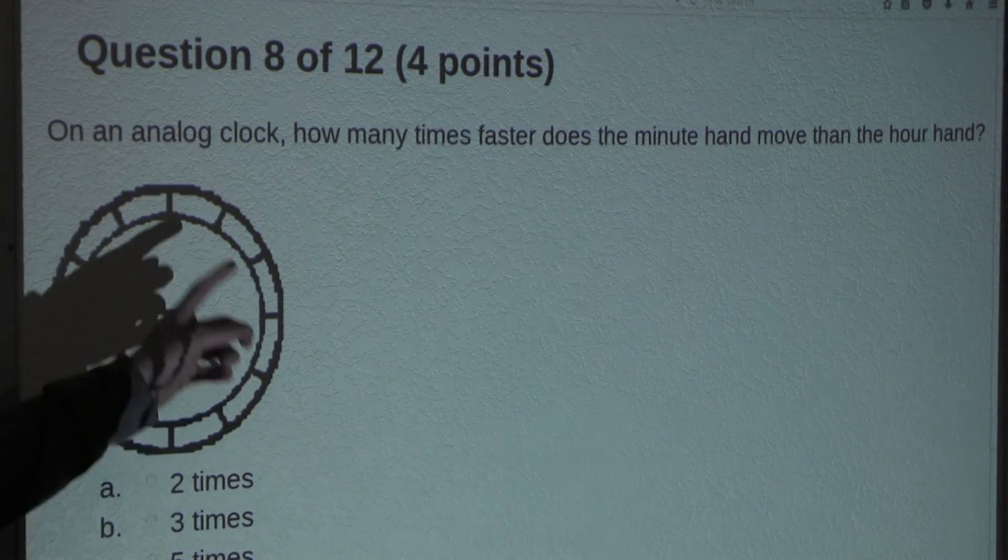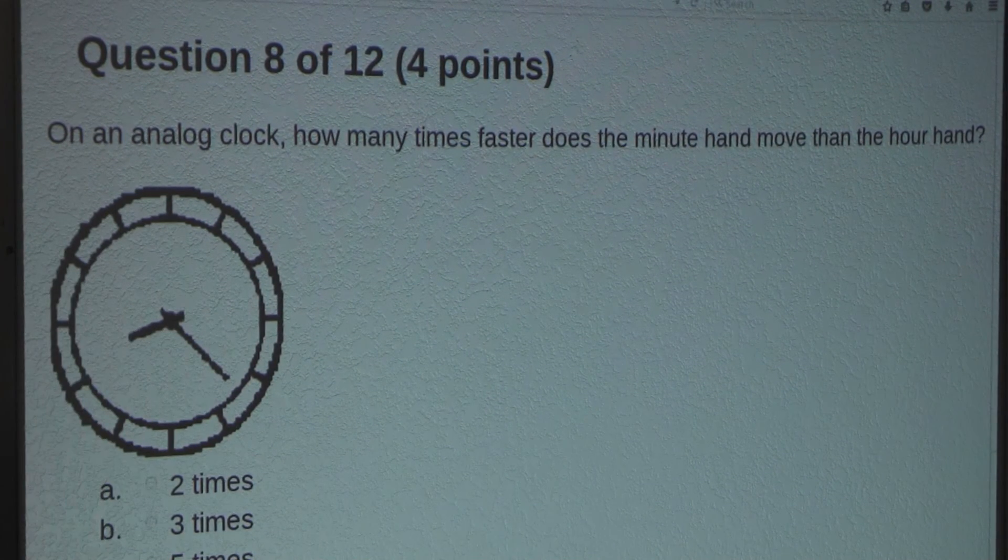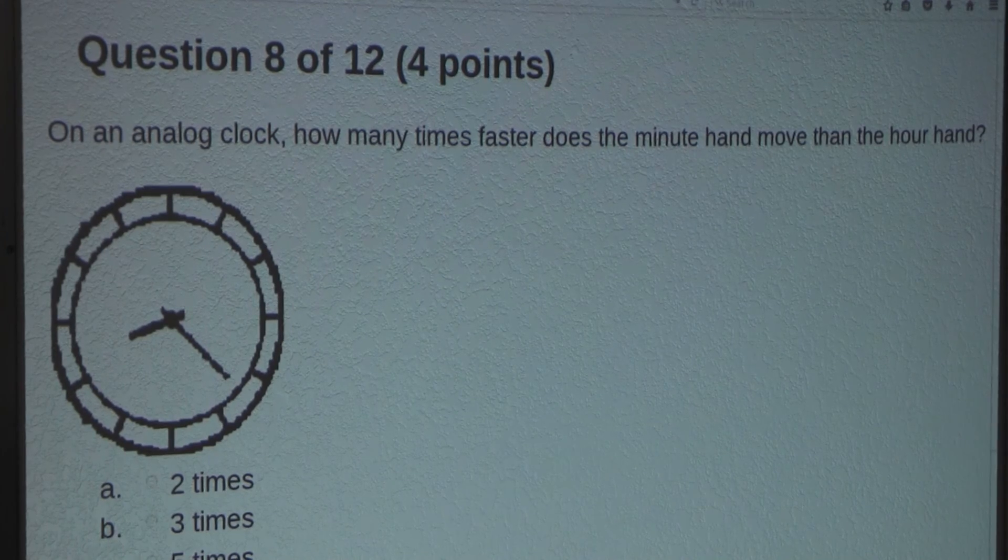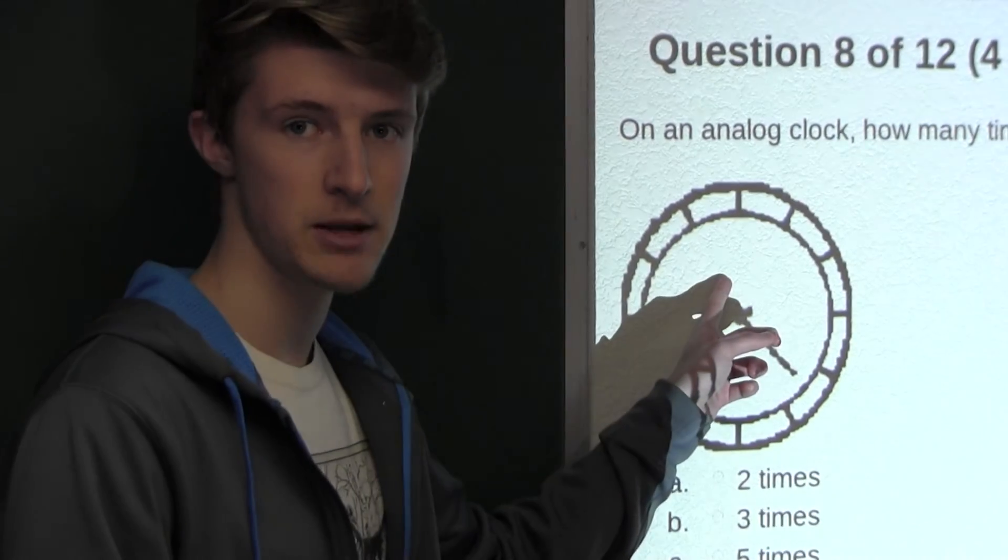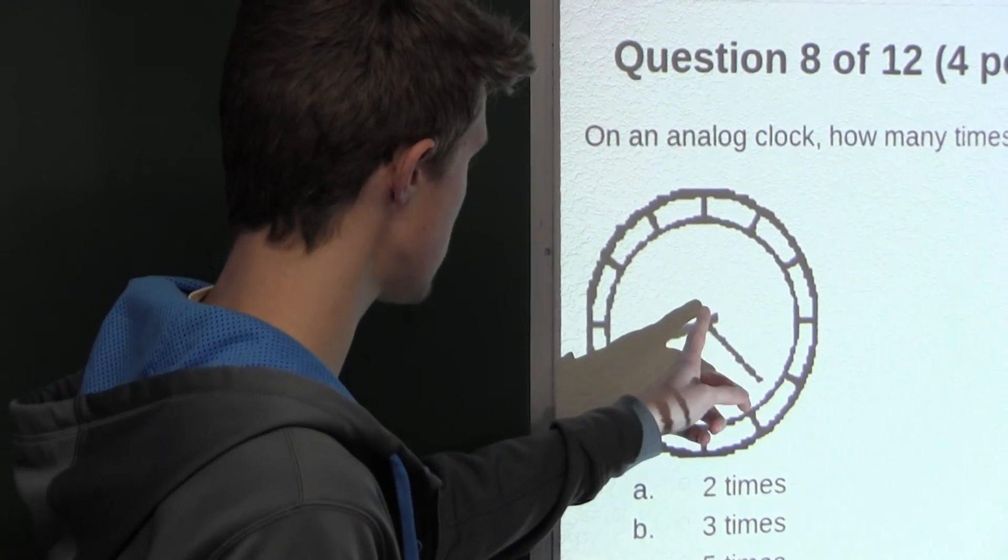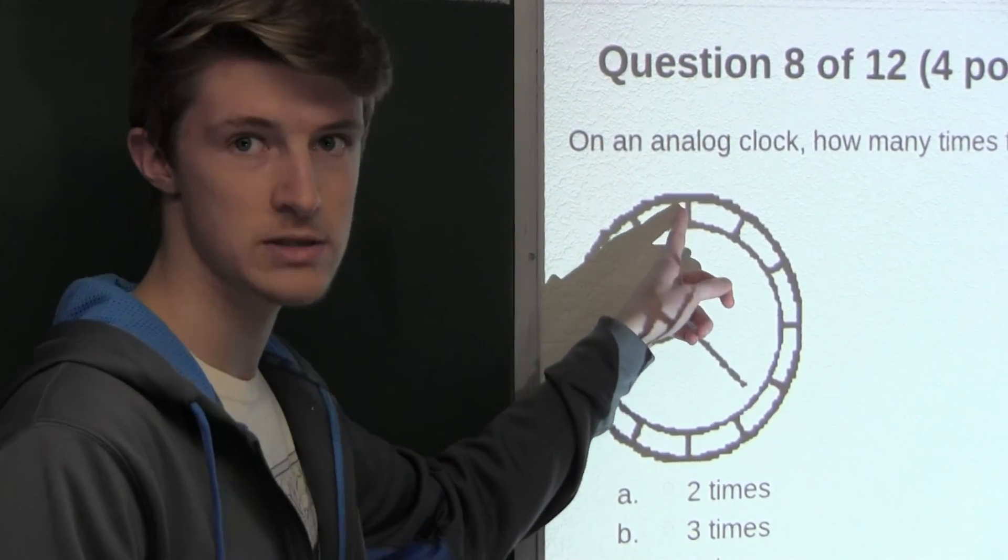Okay, so here is a picture of this analog clock. Now, let's pretend that it is 12 noon, which means that the hour hand and the minute hand will both be directly pointing upwards towards the 12.